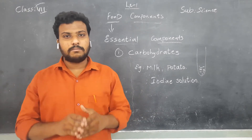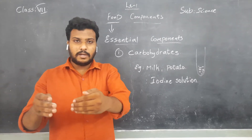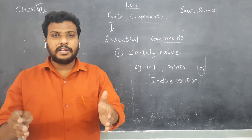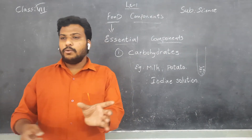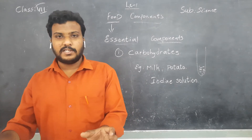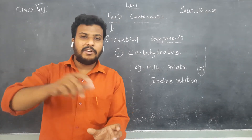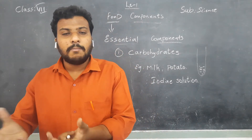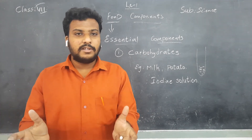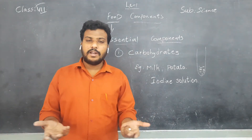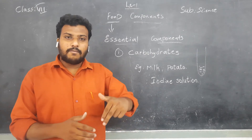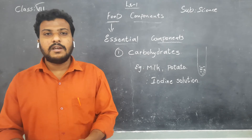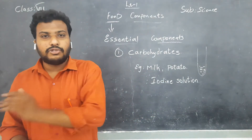Suppose I came to your home and you offered a lemonade drink mixed with five spoons of sugar — it tastes very sweet, too sweet to drink. Then you go to the kitchen, take two or three more glasses of water, and mix it in. The sweetness gets dispersed and I can drink it comfortably. That decrease in sweetness is what we call dilution. So concentrated means more quantity present, and dilution means it is reduced.